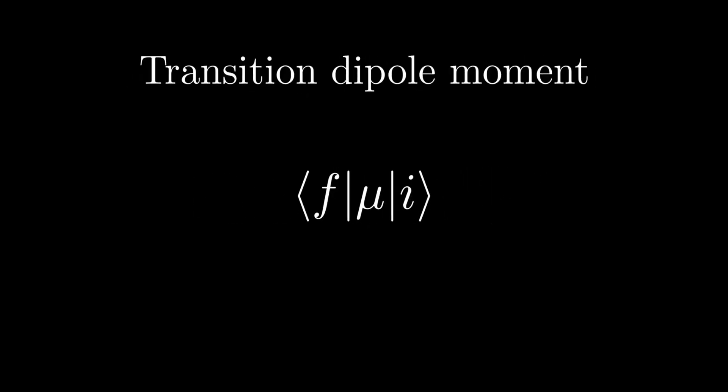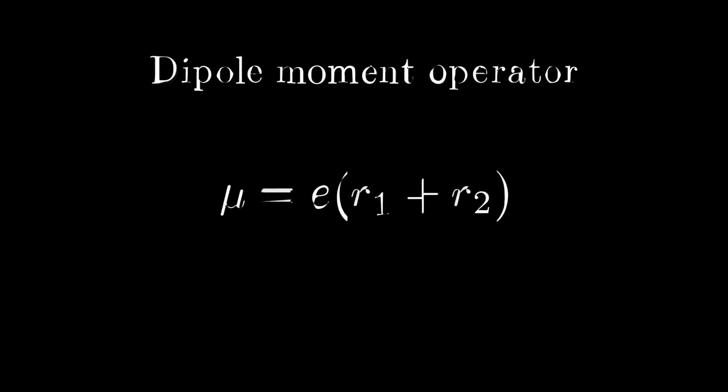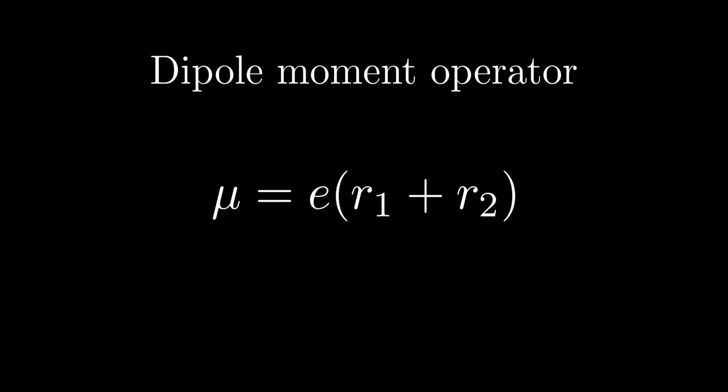It is a measure of the strength of dipolar migration of the charge when the molecule makes the transition from the initial state i to final state f. The dipole moment operator mu is given by E times R1 plus R2, where E is the charge on electron.